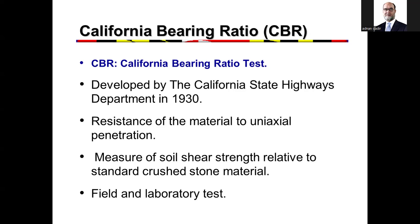The strength of the given soil comes in the numerator and the standard rock in the denominator, so the ratio should be less than 100% and it seldom reaches 100%. This method is so popular because it can be done in the field as well as in the laboratory. The instruments are not sophisticated, and you don't need a truck to carry them — you can do it on a motorcycle.